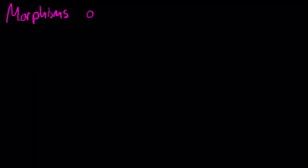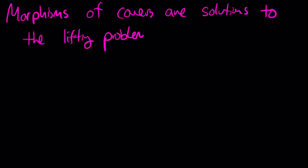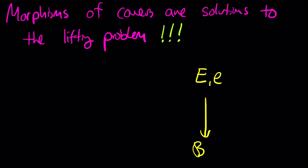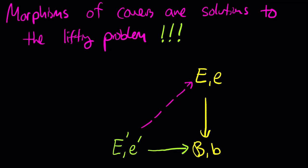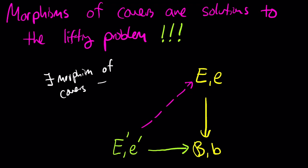Observe that morphisms of covers are themselves solutions to the general lifting problem. If you fix a cover E over B and pick another cover E prime over B with a base point, then a morphism from the cover E prime to the cover E is a solution to the lifting problem. Therefore we know exactly when it has a solution: when the fundamental group of E prime sits inside the fundamental group of E, viewing both within the fundamental group of B. It's a really tidy condition.